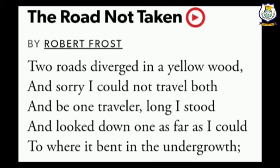Now let's come to the first stanza. 'Two roads diverged in a yellow wood' — two roads, two ways which were separated in a forest which has become yellow in color due to the autumn season. 'And sorry, I could not travel both.' The poet was feeling very sad here; he was unable to travel both roads at the same time. 'And be one traveler.'